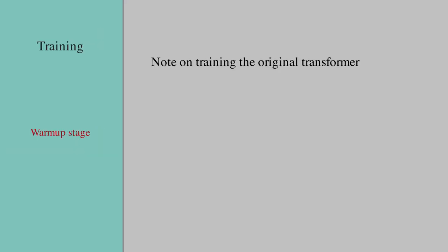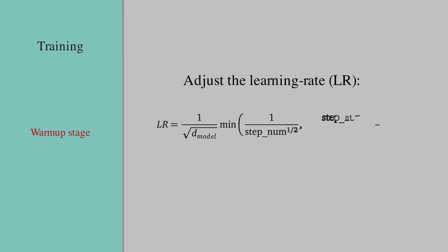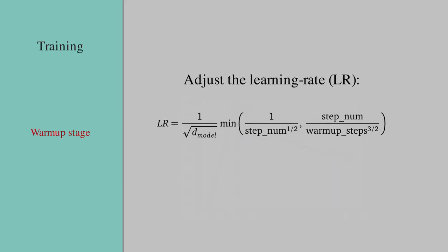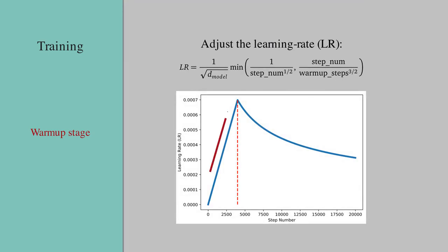For training this model, the authors used Adam optimizer with a warm-up stage which adjusts the learning rate based on the step number using this equation. The number of warm-up steps is set to 4000. With this warm-up stage, the training starts with a very small learning rate which increases for the first 4000 steps and after that the learning rate will decrease gradually.